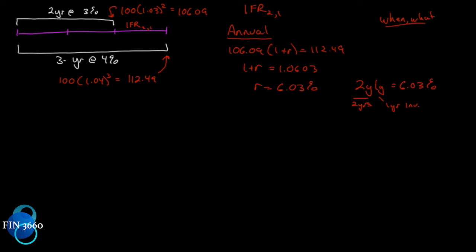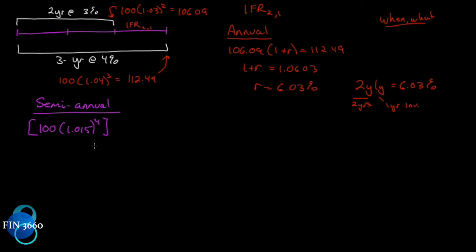That was annual, but there's nothing saying this has to be annual. Let's see what happens with semi-annual compounding. For the semi-annual case, our original $100 investment grows at 1.015 — because at three percent, every six months we get 1.5%, and there are four periods over two years. That result at the end of year two must then grow at (1 + r) squared — since there are two semi-annual periods in the one-year term — to equal what we get on the three-year side: $100 at 1.02 to the power of six.